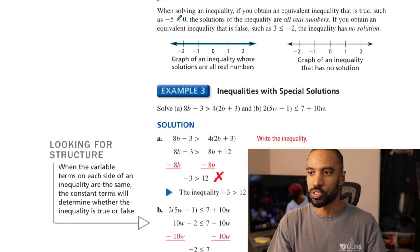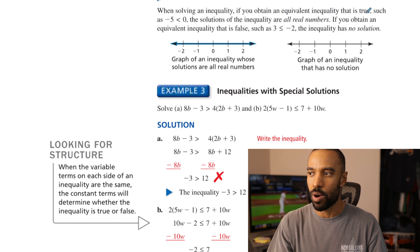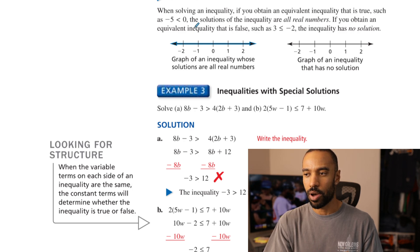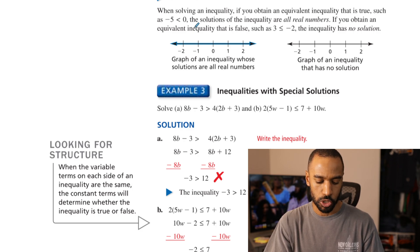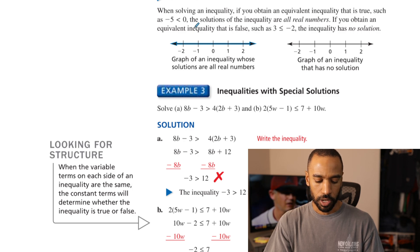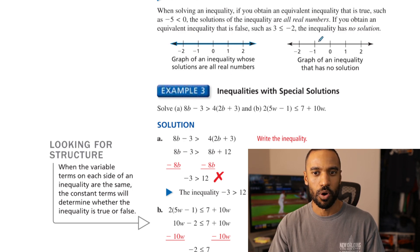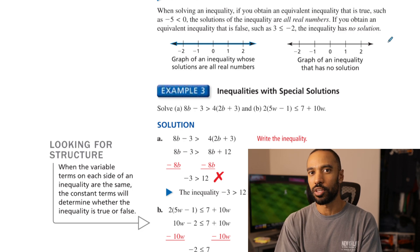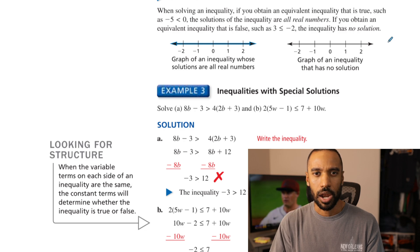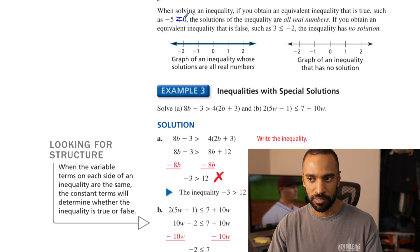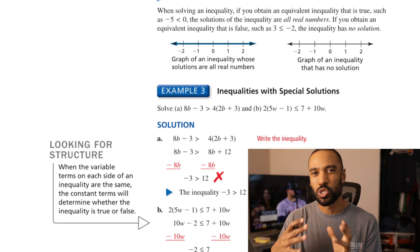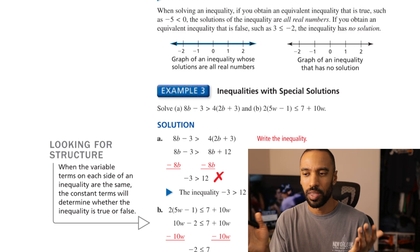There are inequalities with special solutions. When solving an inequality, if you obtain an equivalent inequality that is true — such as negative 5 is less than 0 — the variable is canceled and all that's left is a true statement. The solutions are all real numbers. If you obtain an equivalent inequality that's false — such as 3 is less than or equal to negative 2 — again variables canceled, and that's not a true statement. The inequality has no solution. The graph of all real numbers is literally everything; no solution means there's nothing to graph on the number line.